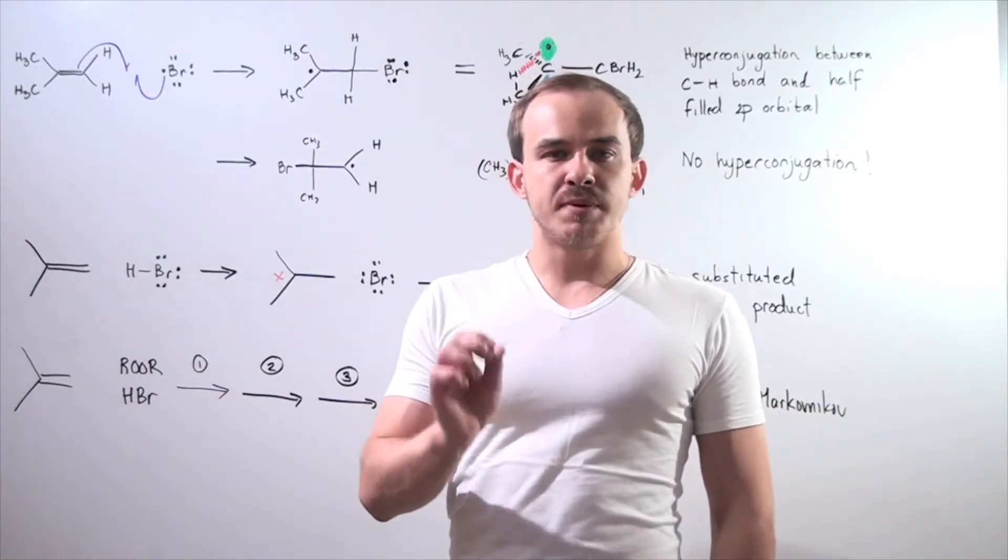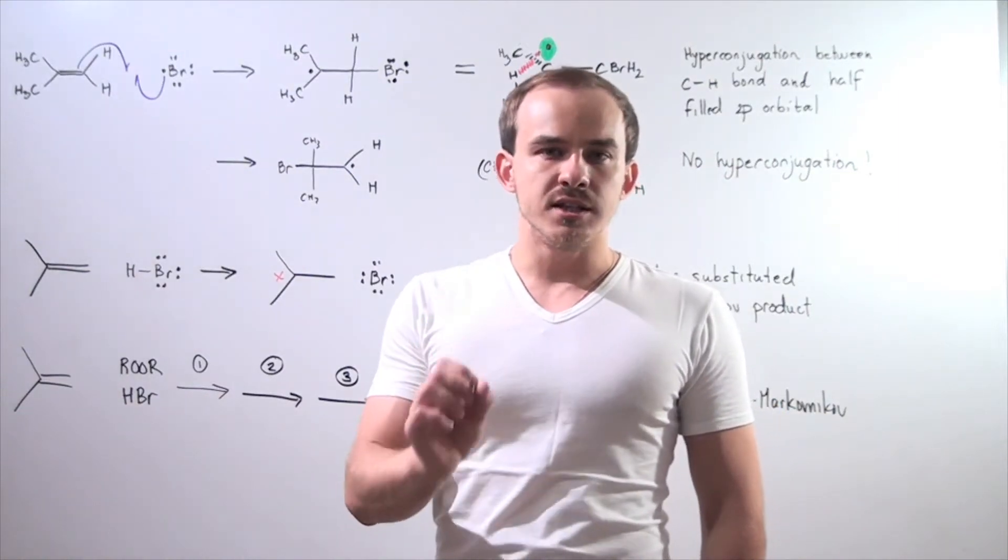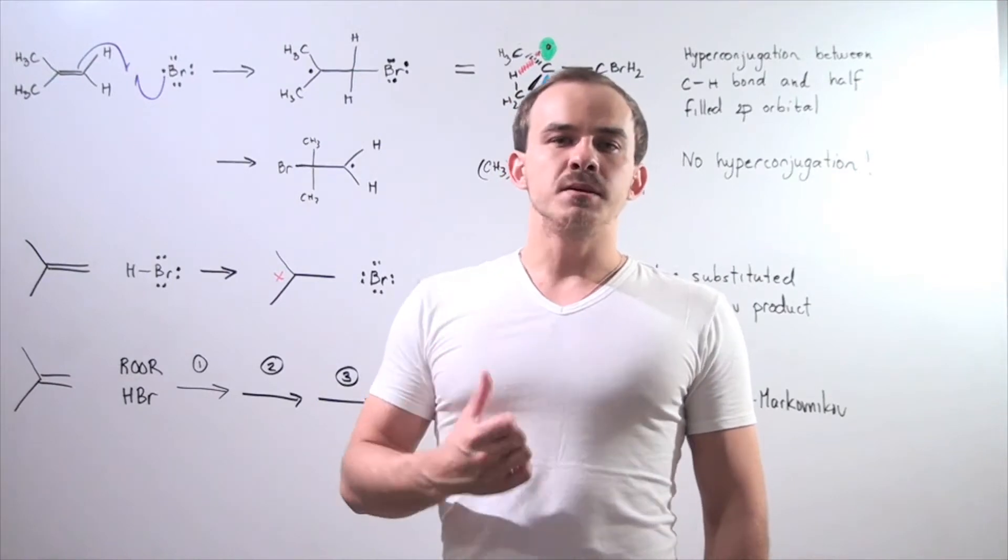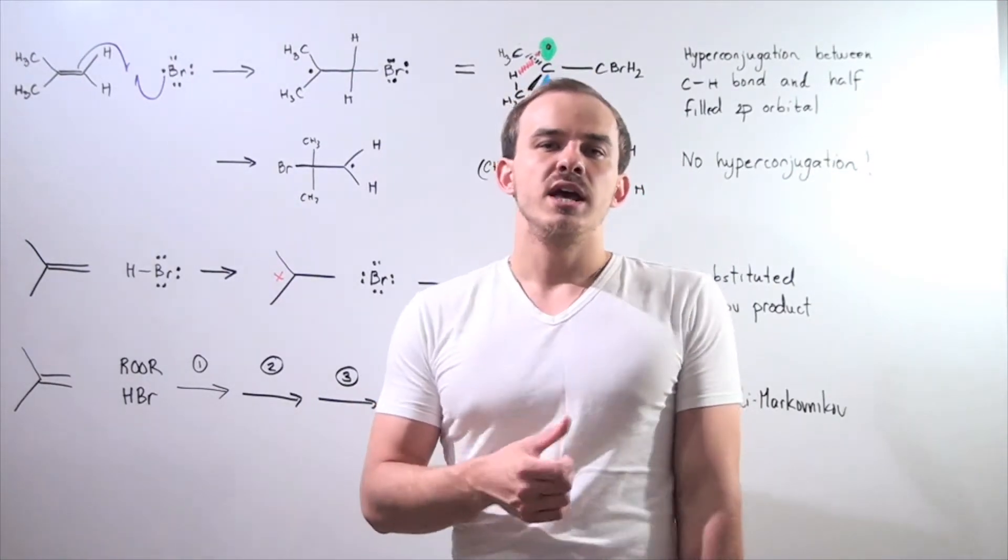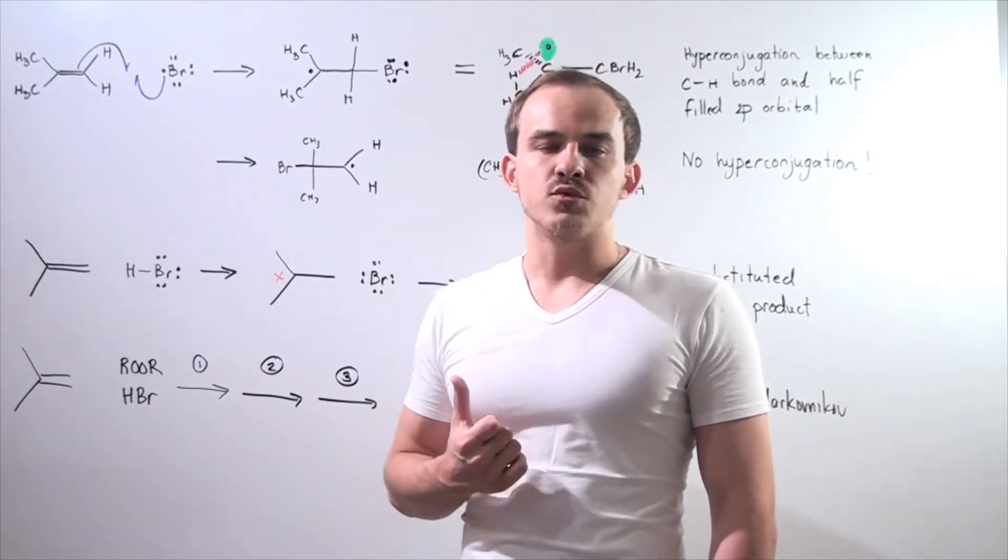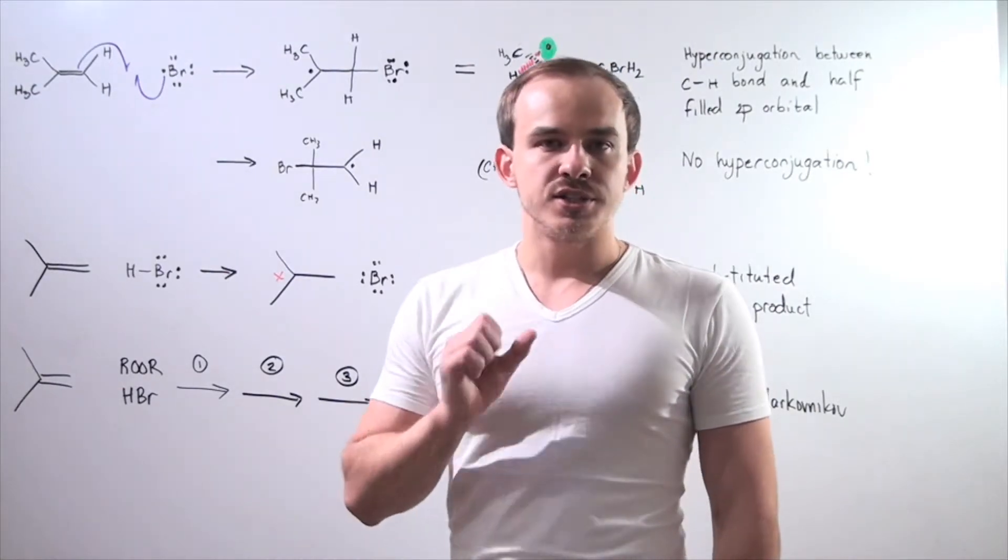So let's discuss regioselectivity of radical addition reactions. Let's suppose we take a peroxide, mix it with an HBr molecule, and form a chain-carrying radical. That's the initiation step.